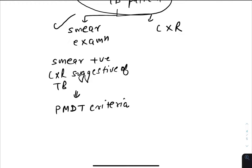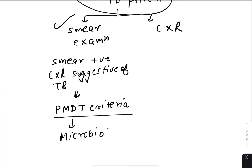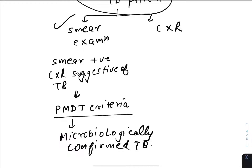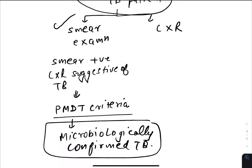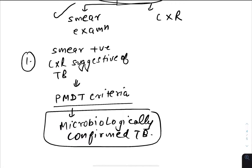The PMDT criteria helps determine whether the patient is at high risk of drug resistance. This is done using DST — drug sensitivity testing. Based on this, the patient is classified as microbiologically confirmed TB, and you can determine whether you are dealing with drug resistance or drug sensitivity.